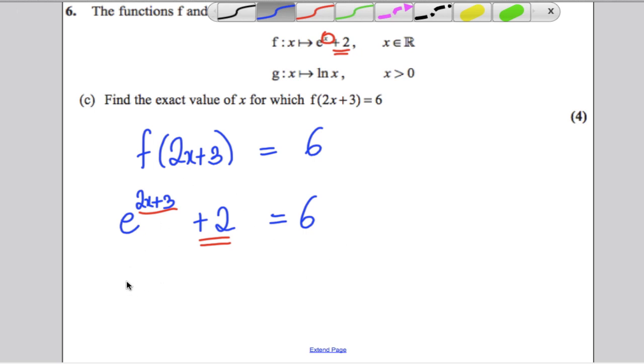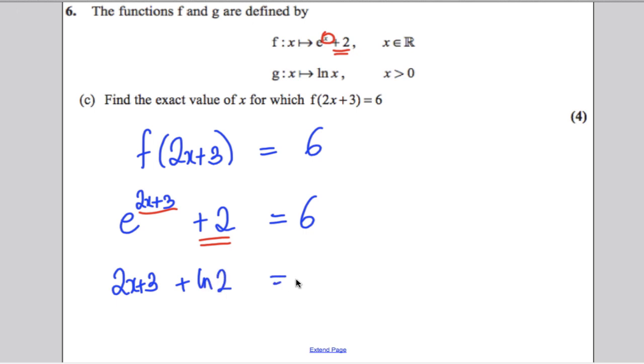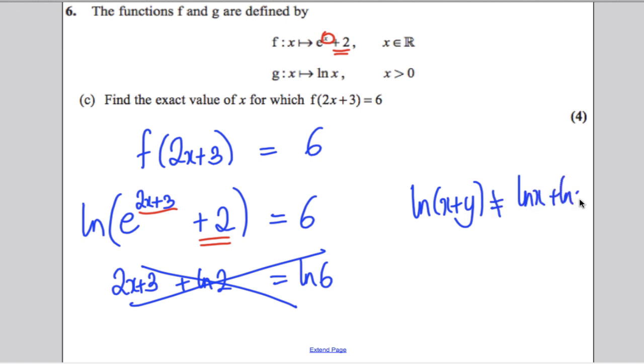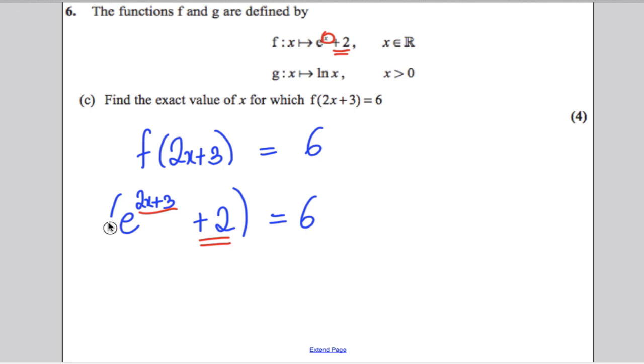Now, another mistake people do is at this stage, they take ln's of both sides. And I saw things like, therefore, 2x plus 3 plus ln 2 is equal to ln 6. That is not right at all. Because if you take ln of this here, then say for example, ln of x plus y, that is not equal to ln x plus ln y. It is not equal to that. So, you cannot do anything of that nature.